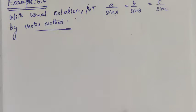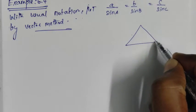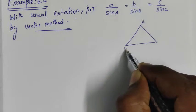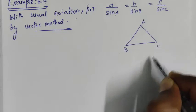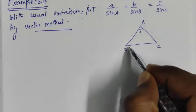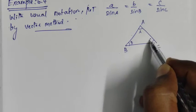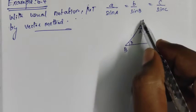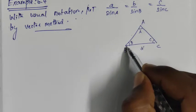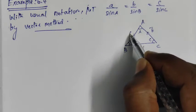We will prove this for any triangle ABC. The vertex A has interior angle A, vertex B has interior angle B, and vertex C has interior angle C. Side a is opposite to angle A, side b is opposite to angle B, and side c is opposite to angle C.